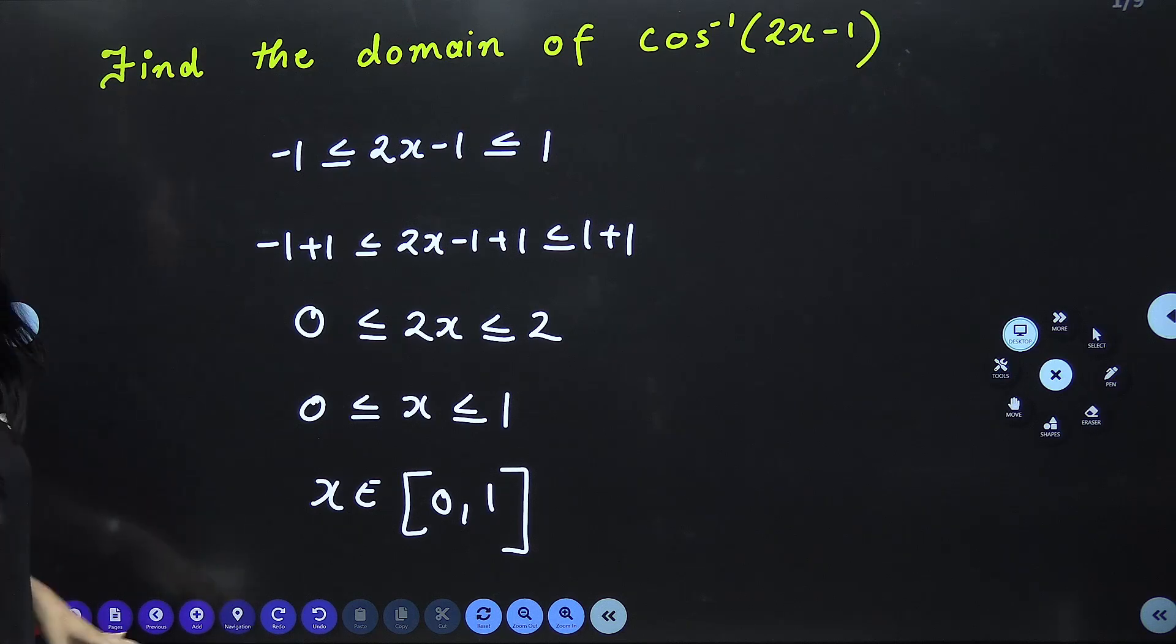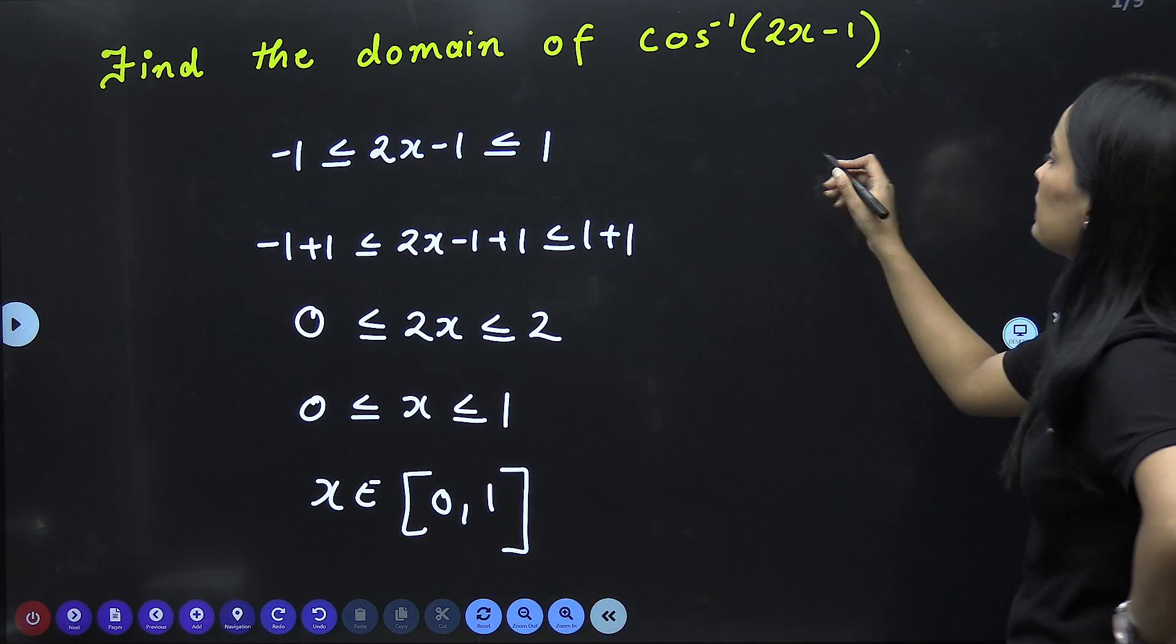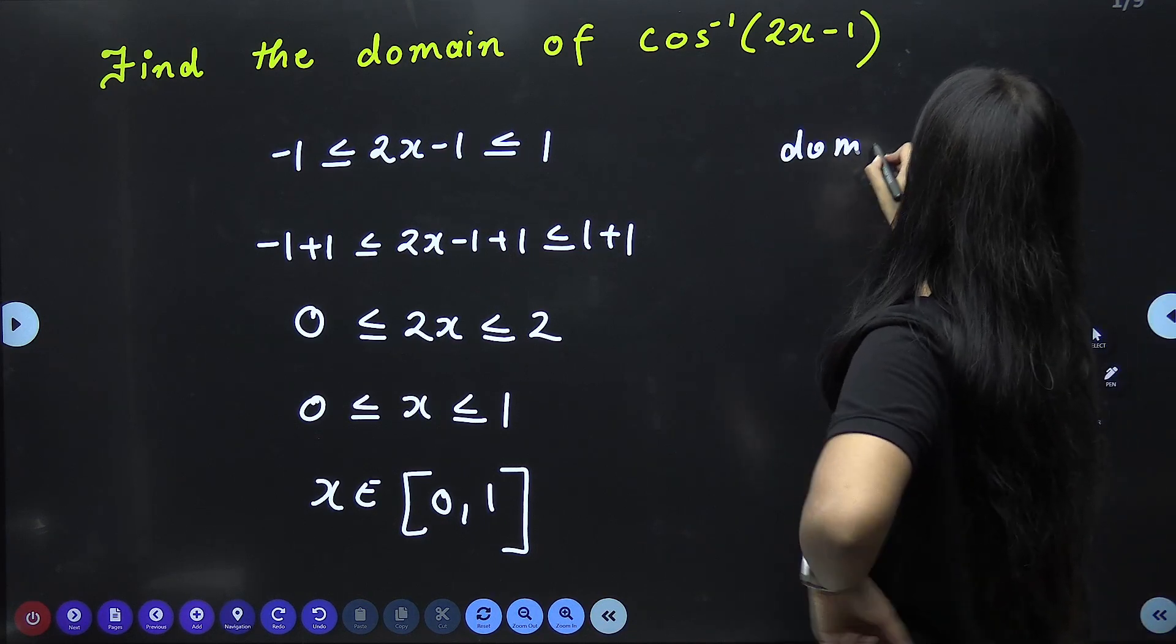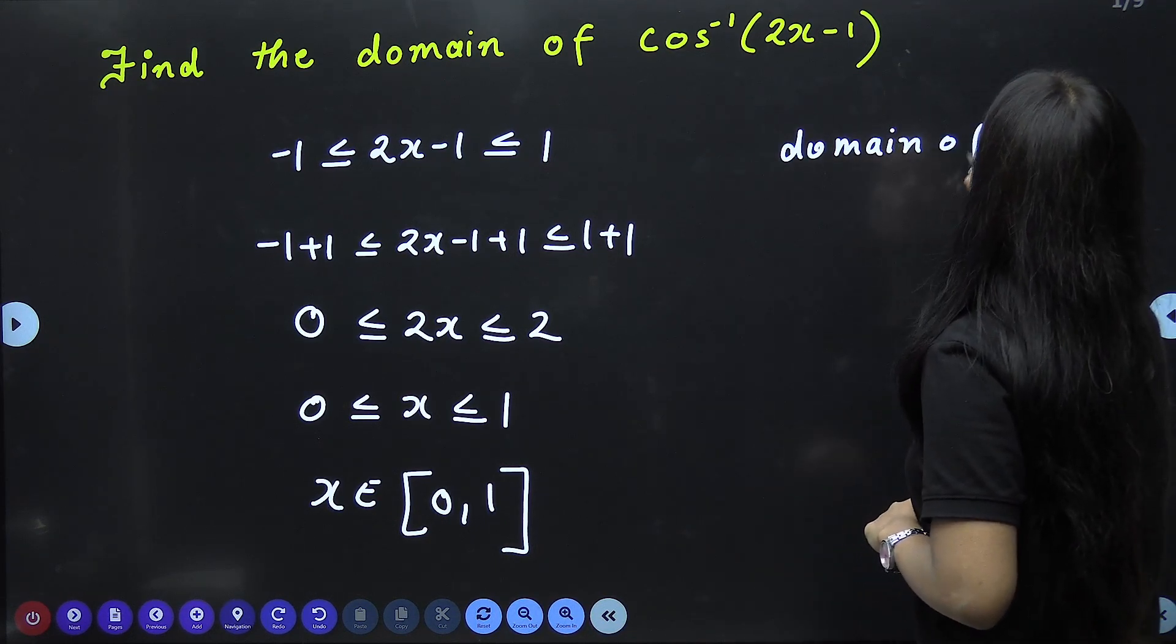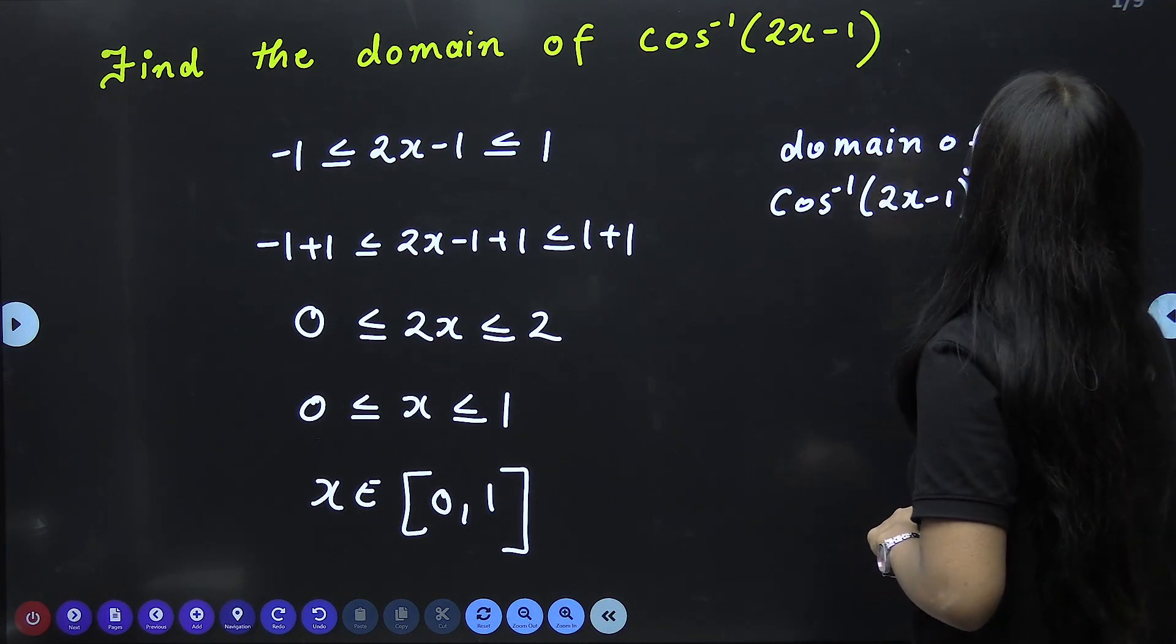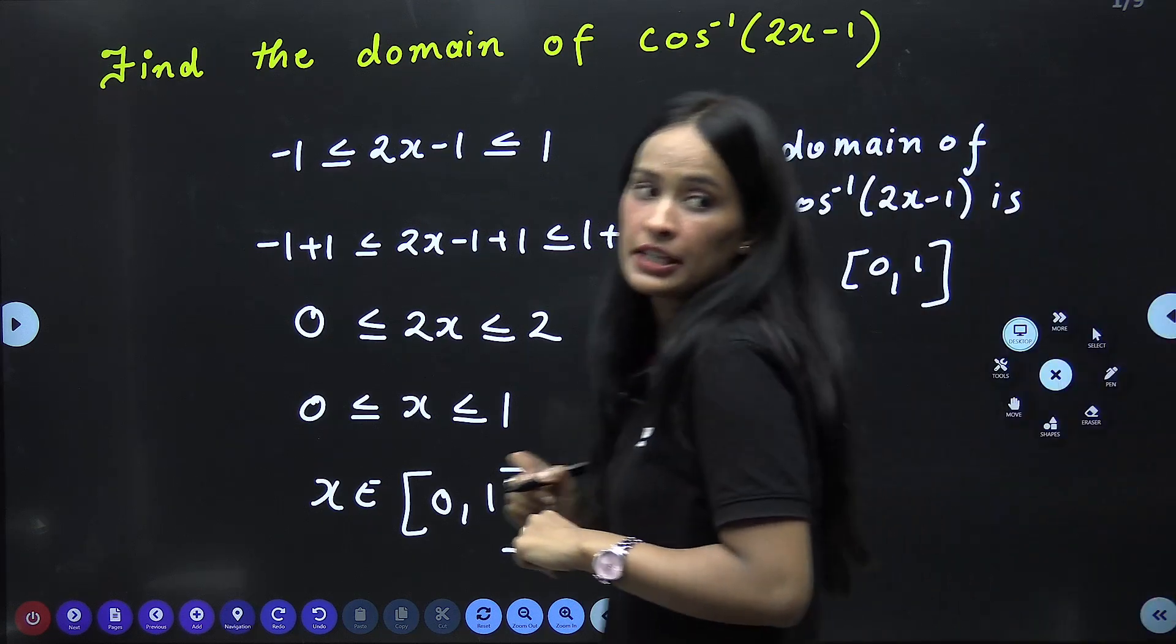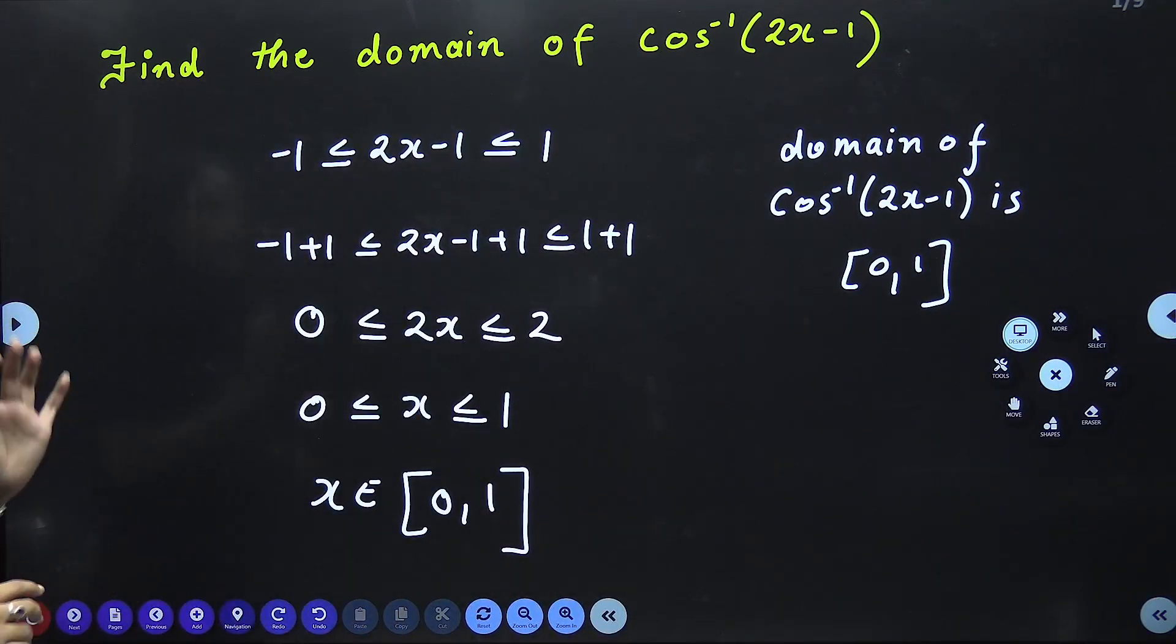As you get x single, you will see where your x belongs. Under the closed interval 0 to 1. That means what? That means that the domain is coming from this function. You will write that domain of cos inverse 2x minus 1 is closed interval 0 to 1. This is the domain. You will take a screenshot of this one. Then you will go ahead.